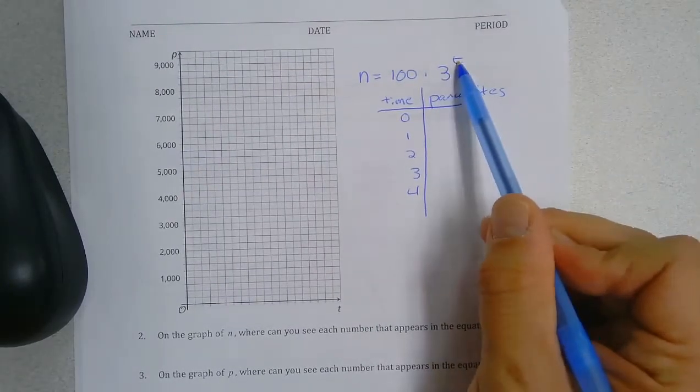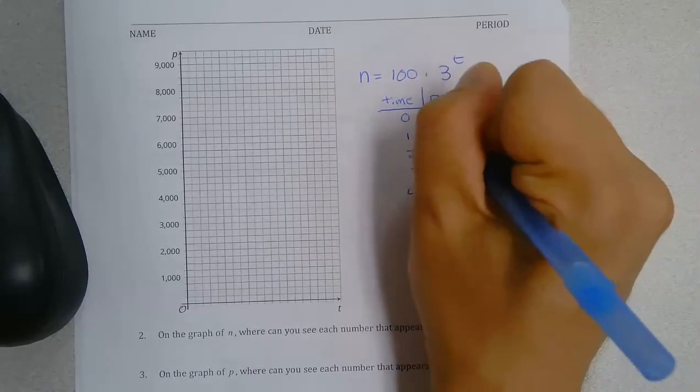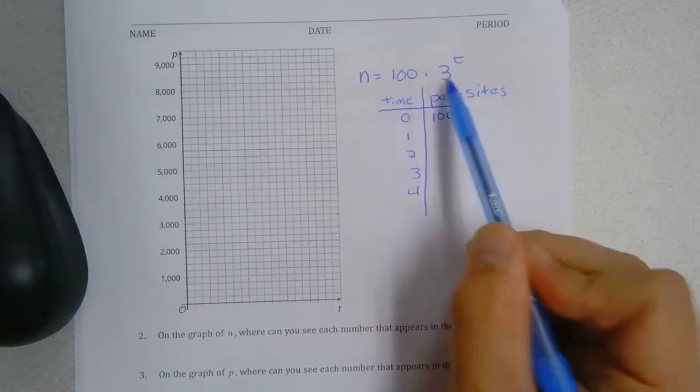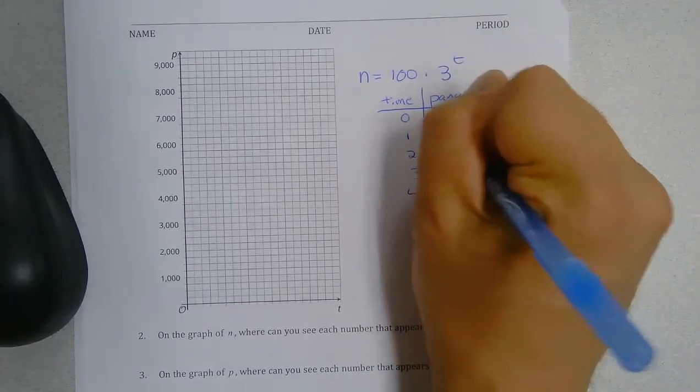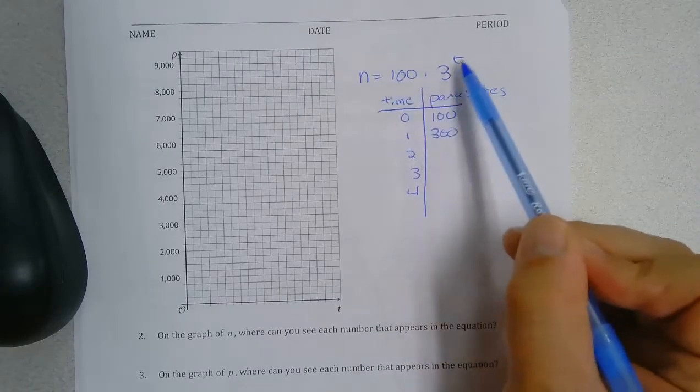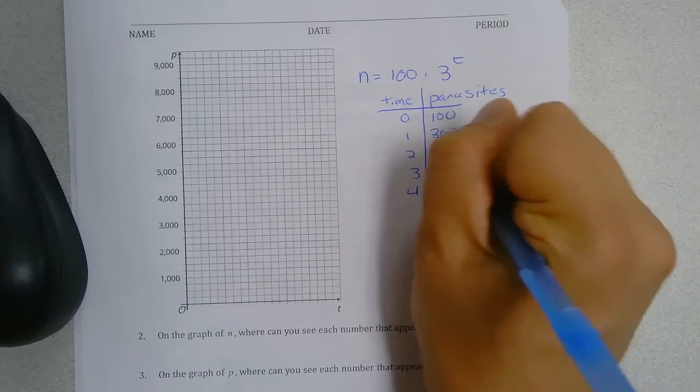Remember, initially, 3 to the 0 is just 100 times 1, so we would have 100. And then times 3 to the 1st, so 100 times 3 is 300. And then 100 times 3 squared, or 100 times 9, is 900.